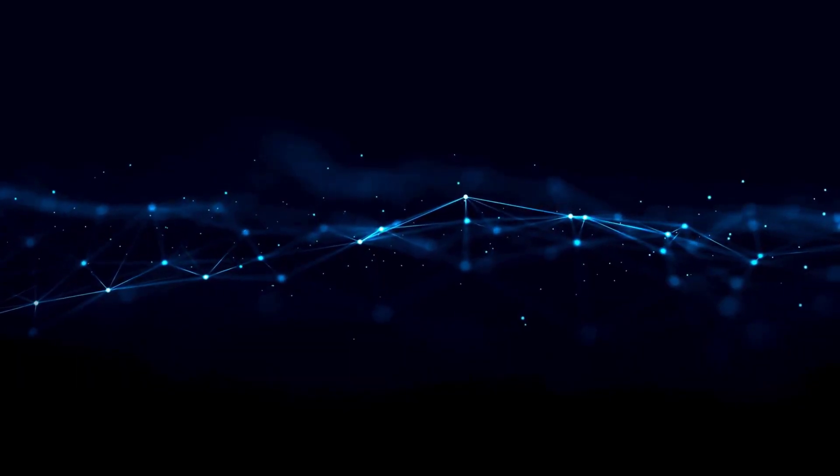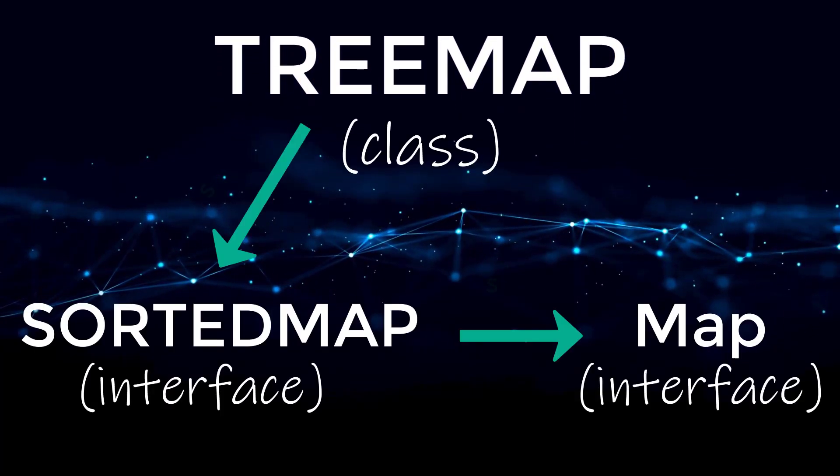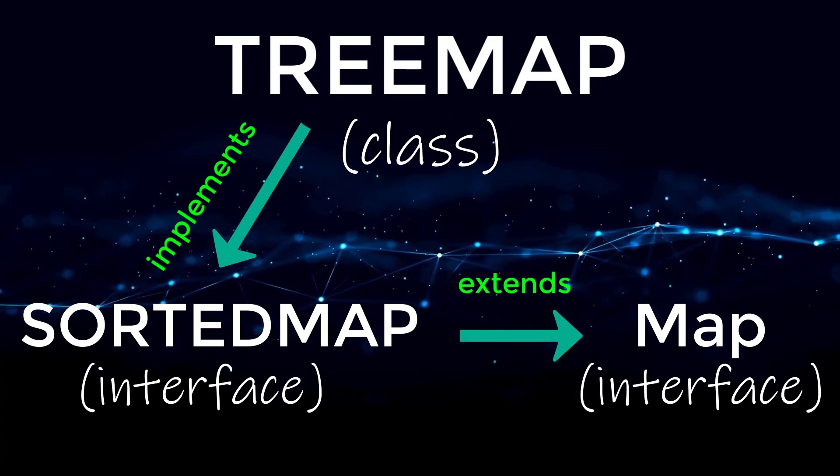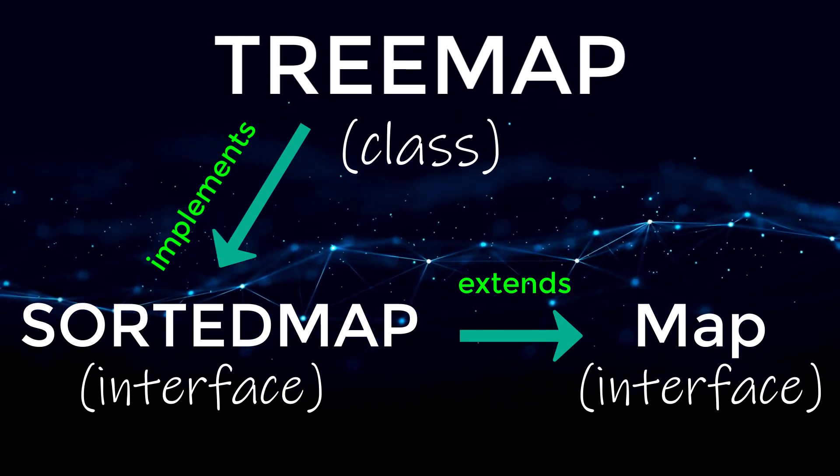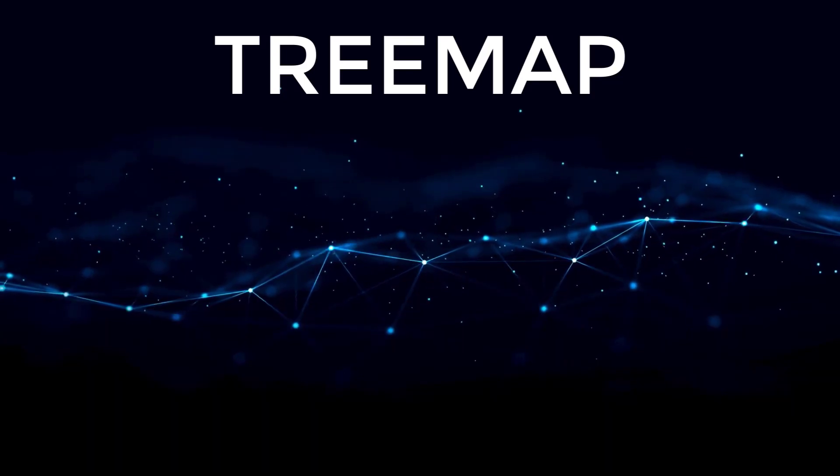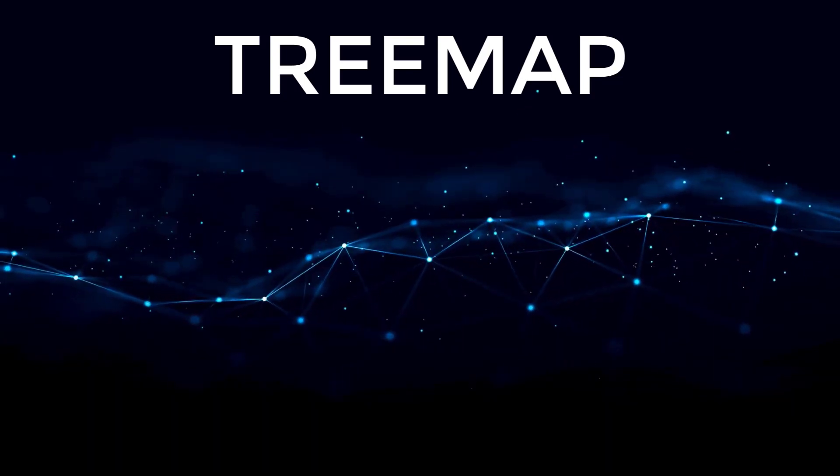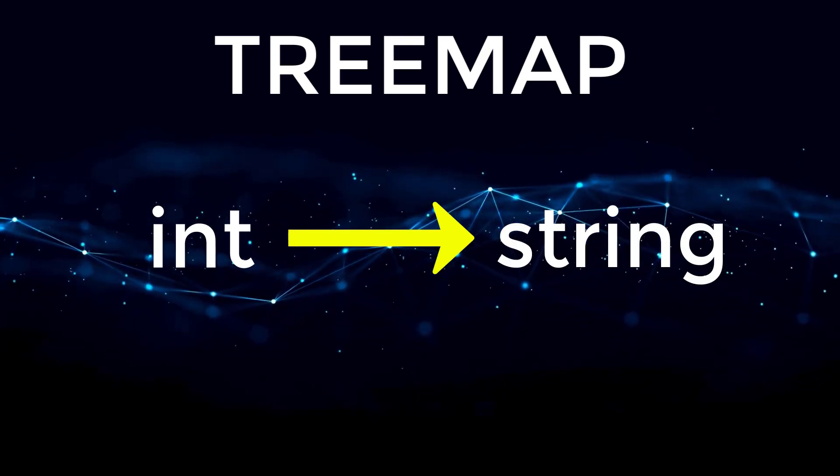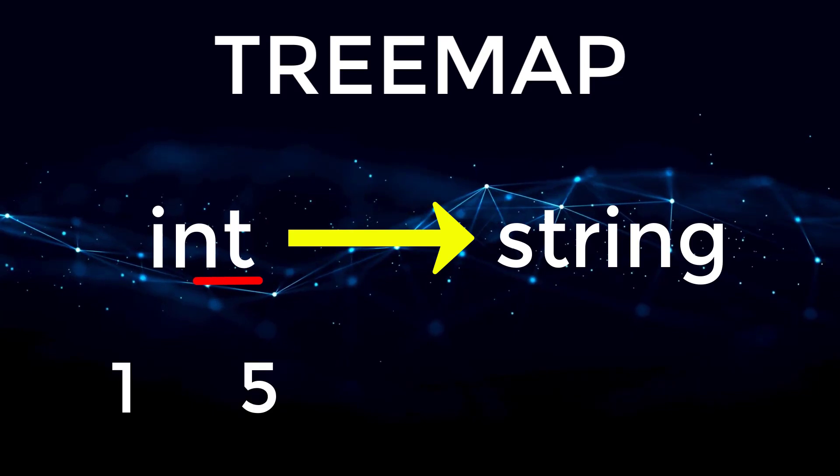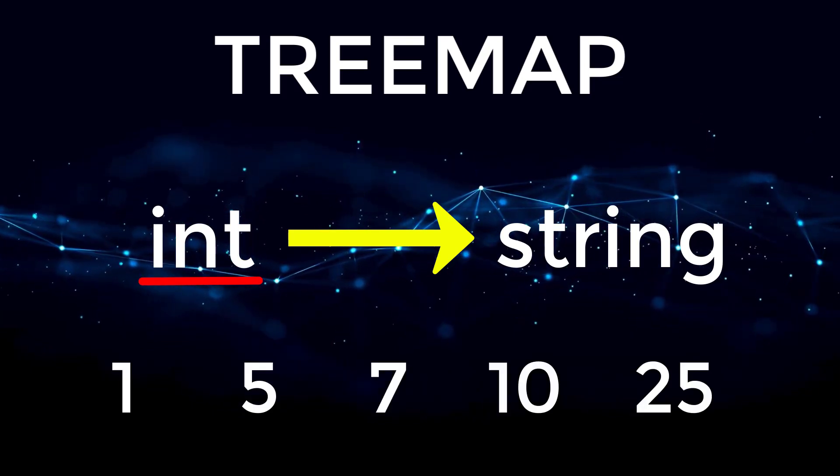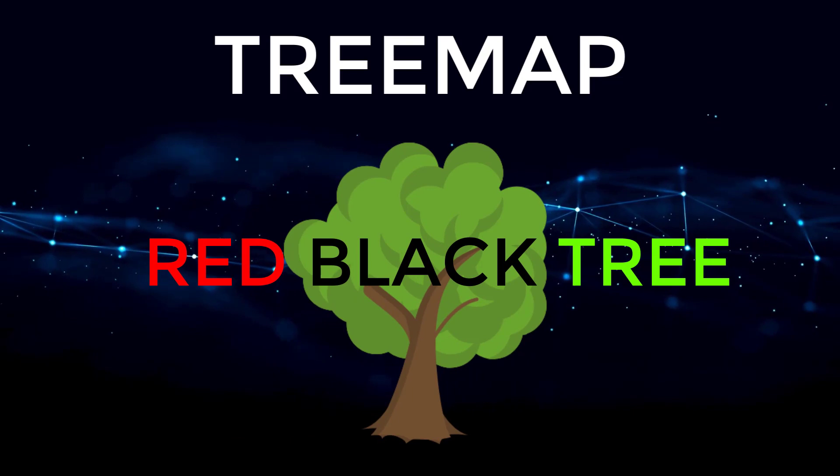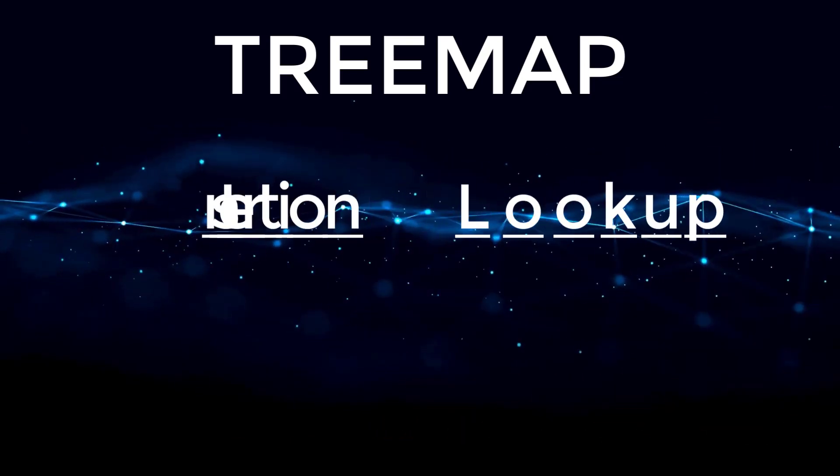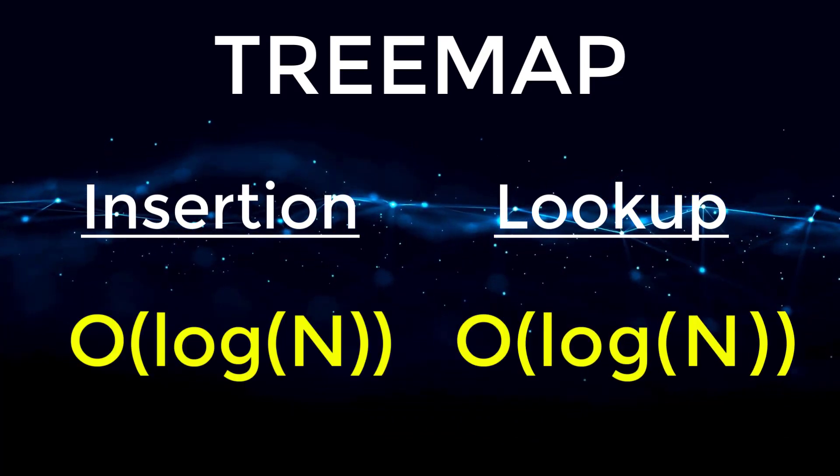Data structure number three is a tree map. So a tree map inherits from a hash map, but the difference is that the entries are sorted by the ordering of the keys or by a custom comparator class that you provide to the constructor. So for example, if we were trying to store the entry of an integer mapping to a string, all of the entries inside of your tree map would be sorted in ascending order based on that integer value. Under the hood, this data structure is using a red-black tree to maintain order in an efficient manner. So the performance for insertions and lookup are actually log of N.